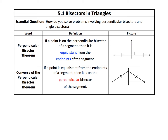Put a point P on your picture and label the endpoints A and B. This theorem tells us the distance from P to A is congruent to the distance from P to B, because that point is equidistant from the endpoints. The length of AP equals the length of BP.